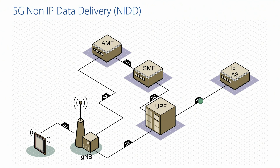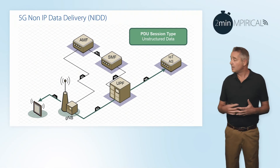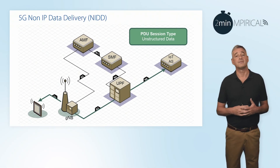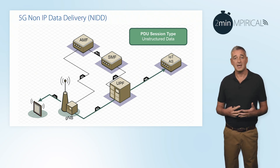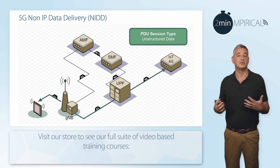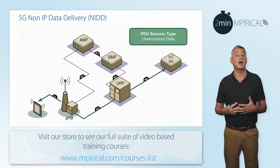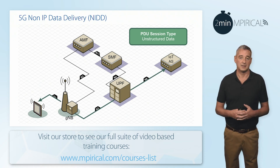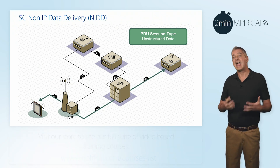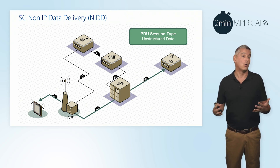The first option came about in Release 15 of the 3GPP specifications when 5G was introduced. Here we can see that traffic would have left the IoT application server and be delivered down to the UPF, the user plane function, and from here down to the gNB, across the new 5G air interface and onto our IoT device. This would have been set up using a PDU session type set to unstructured data, again being able to carry any type of traffic, not requiring a specific IP address, be that IPv4 or IPv6.